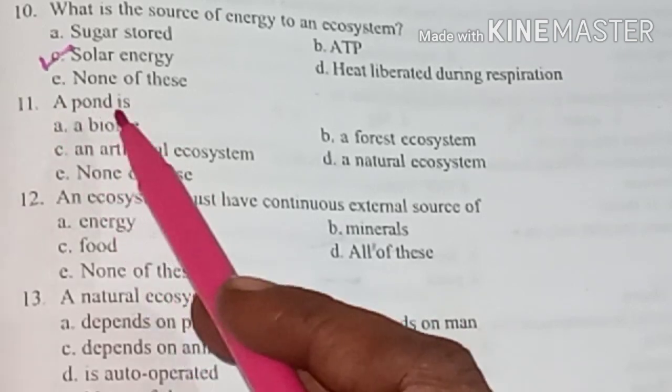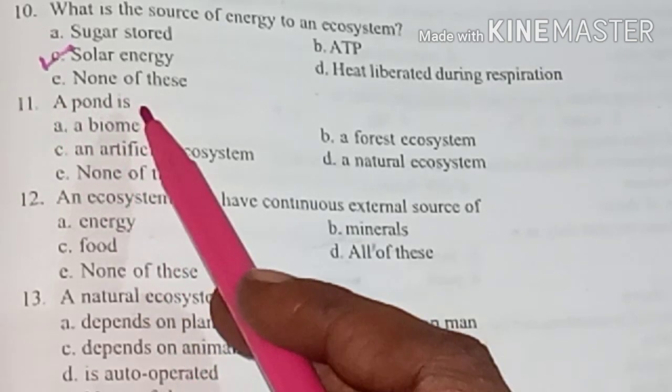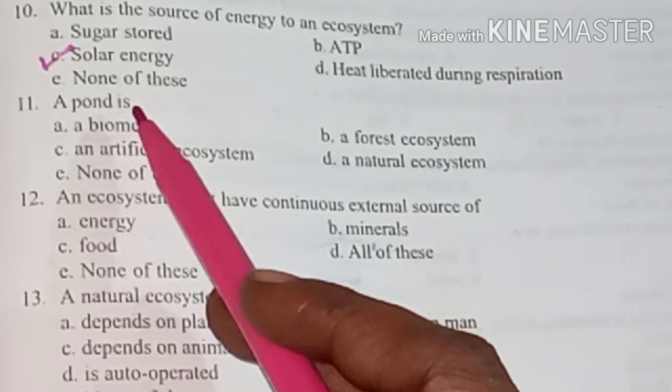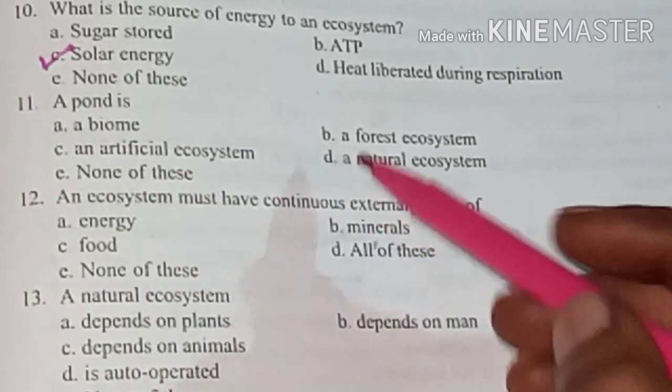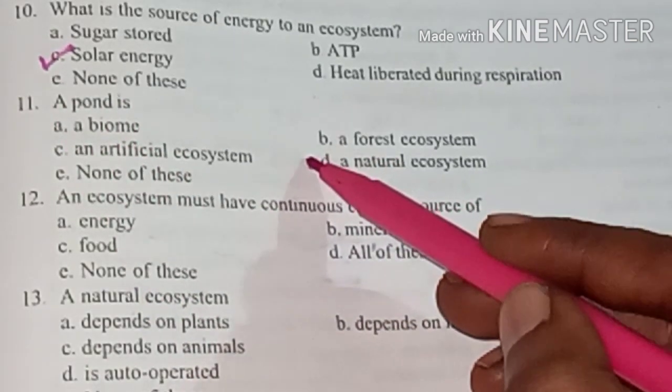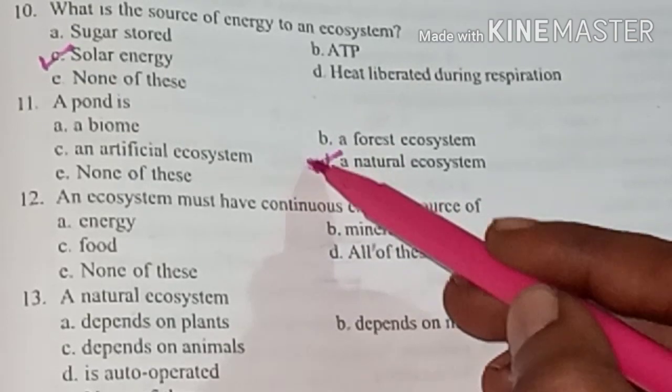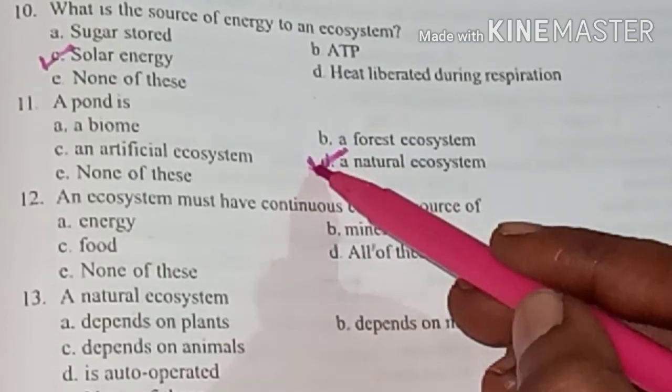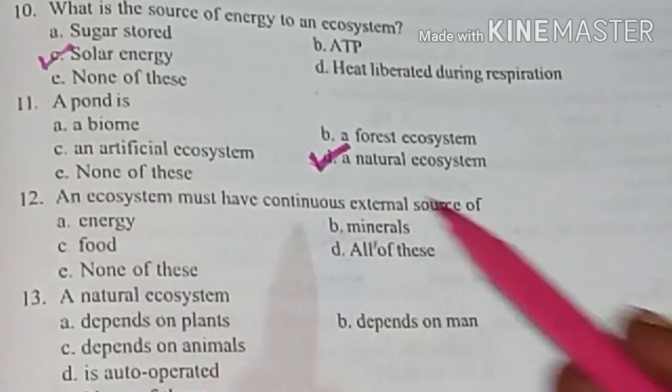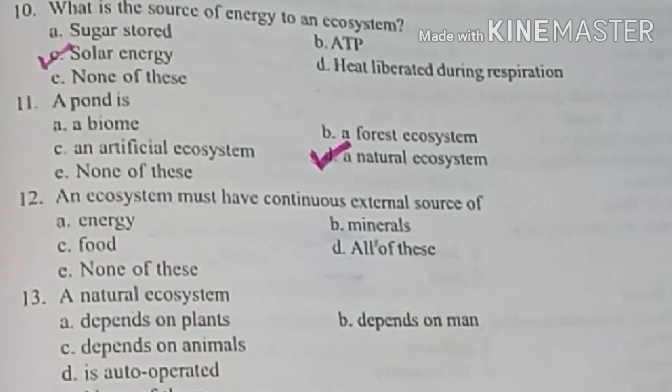A pond is answer option D: A natural ecosystem.